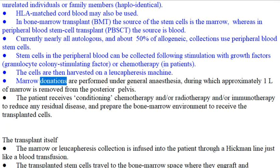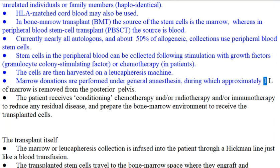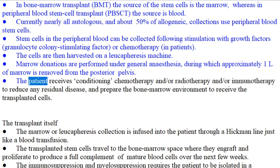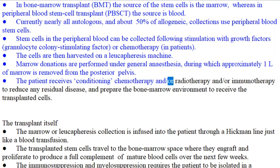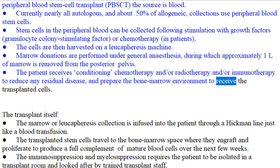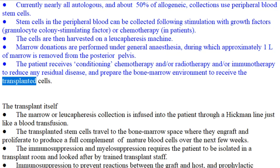Marrow donations are performed under general anesthesia, during which approximately 1 litre of marrow is removed from the posterior pelvis. The patient receives conditioning chemotherapy and/or radiotherapy and/or immunotherapy to reduce any residual disease and prepare the bone marrow environment to receive the transplanted cells.